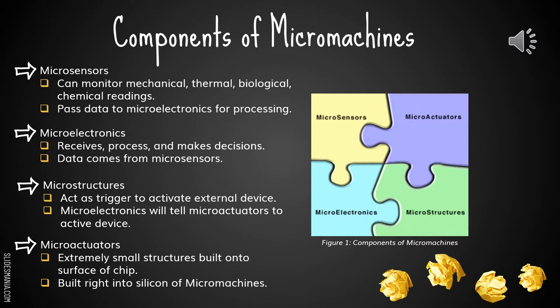There are 4 components of micromachines. The first one is microsensors that can monitor mechanical, thermal, biological and also chemical readings and pass data to microelectronics for processing. The next one is microelectronics that receive, process and send decisions and data from microsensors. The third one is microstructure that acts as a trigger to activate external devices. And the last one is microactuators, which are extremely small structures built onto the surface of a chip and built right into the silicon of micromachines.